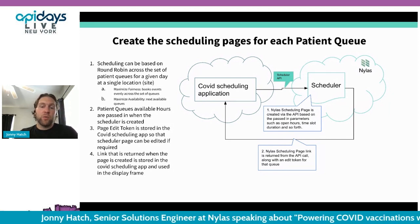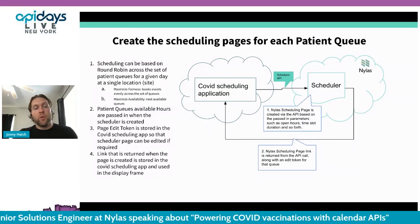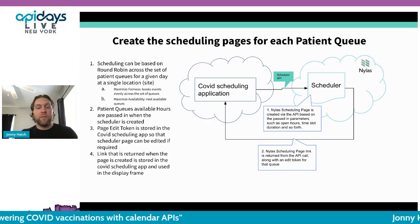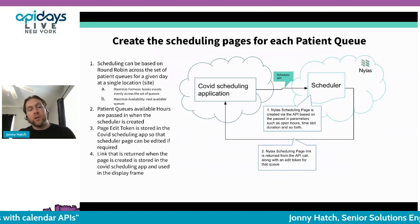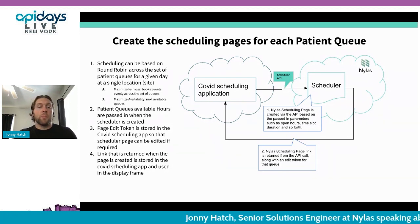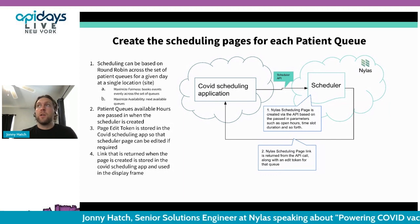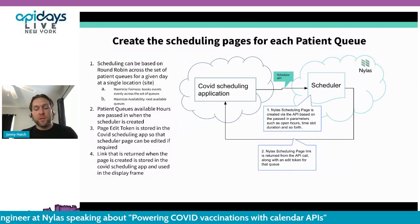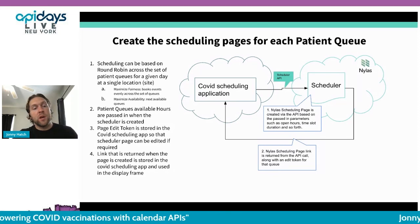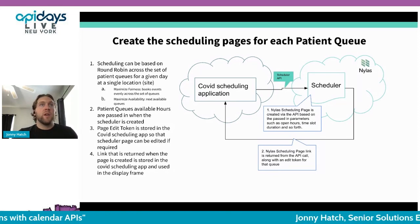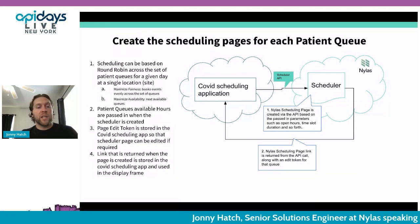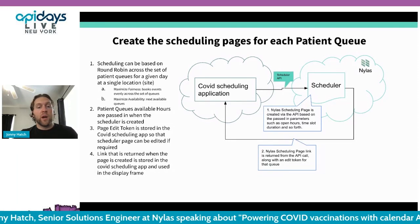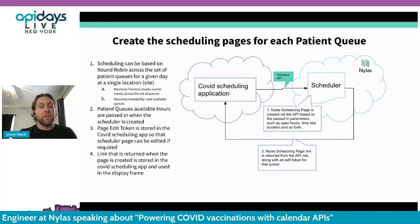We had a couple of different modes for the round robin as well — we could either maximize fairness or maximize availability. Fairness means you have 100 calendars in the round robin rotation and you go one by one, distributing appointments evenly across all of them. Or you can maximize availability, which with COVID vaccines is probably what you'd want — our biggest customer used this to ensure that no doses ever expired. They wanted to make sure any available time slot across hundreds or thousands of slots for a given day could be booked.